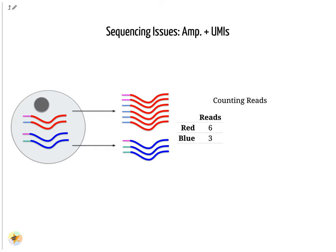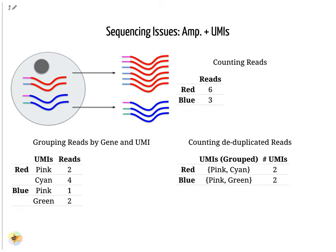Consider the example: we have two red transcripts and two blue transcripts inside the cell, which after amplification equate to six red transcripts and three blue transcripts. If we were to compare the differential gene expression between the red and blue transcripts just by looking at the amplified reads, we would come to the false conclusion that the red transcripts are expressed twice more than the blue. However, if we group the reads by their UMIs and count only the number of unique UMIs per transcript, deduplicating the reads which share the same transcript and UMI, we arrive at two red reads and two blue reads which better represents the true number of transcripts.